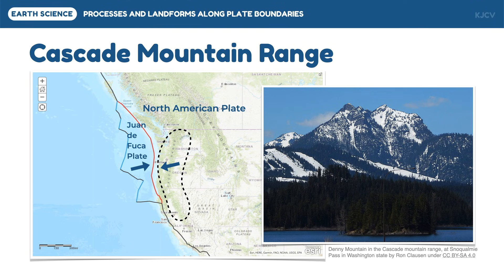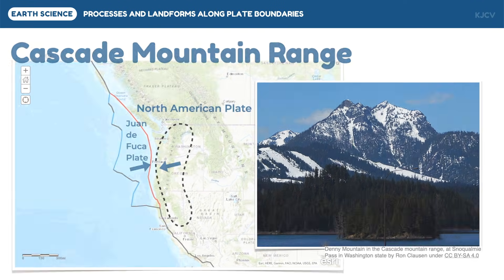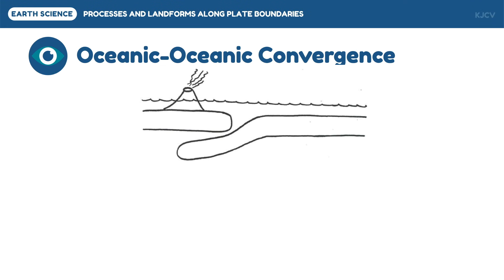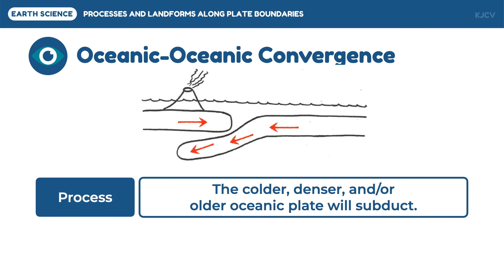The next type of convergent plate boundary is the oceanic-oceanic convergence. In this type of plate boundary, the colder, denser, or older oceanic plate will subduct, because older oceanic crusts have cooled down first than younger oceanic crusts. Density increases as the oceanic crust cools down. After subduction, melting will also occur until magma goes to the surface to form volcanic island arcs. The difference between a volcanic island arc and a volcanic arc is that the former starts as an underwater volcano until it becomes a volcanic island, while the latter forms on the continental landmass.